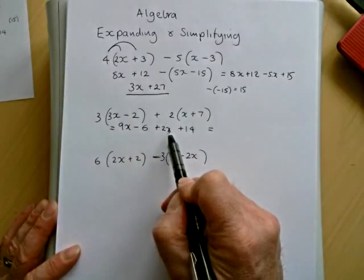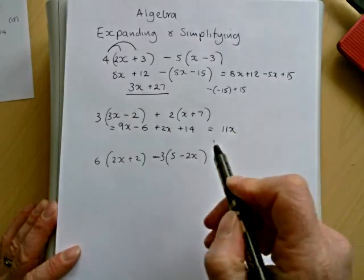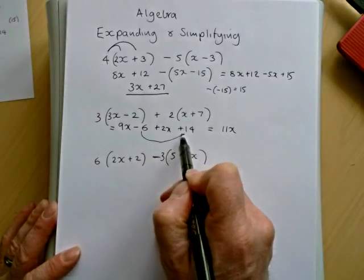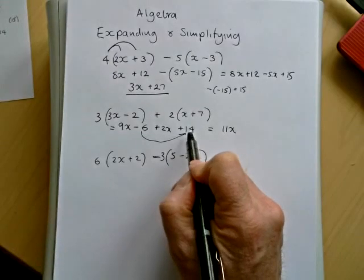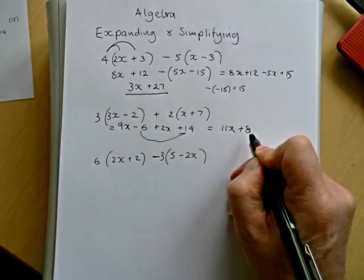So we've got 9x plus 2x, which is going to be 11x. Then we've got minus 6 plus 14. Plus 14 is exactly the same as 14 minus 6, which will give me plus 8.